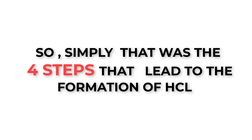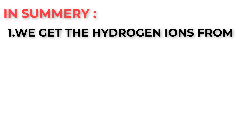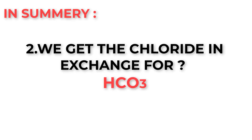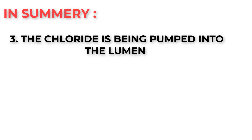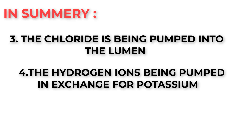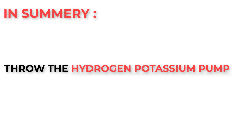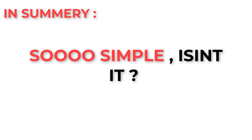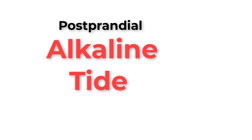In summary, those were the four steps leading to the formation of hydrochloric acid. We get hydrogen ions from water dissociation, and we get chloride in exchange for bicarbonate, which comes from the reaction catalyzed by carbonic anhydrase. The chloride is pumped into the lumen, and hydrogen ions are pumped into the lumen in exchange for potassium through the hydrogen-potassium pump. When hydrogen and chloride combine, they form HCl.